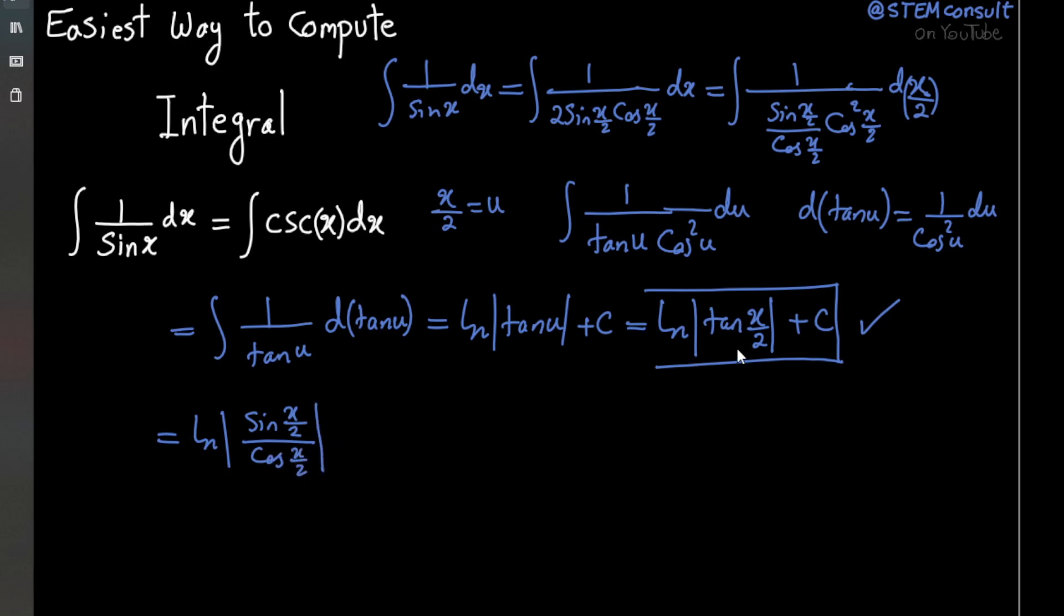Let's for a minute forget about this plus c, which is just a constant, and I can rewrite this by just multiplying both numerator and denominator by 2 sine x, so I get 2 sine squared x over 2, and then denominator become 2 sine x over 2 cosine x over 2.